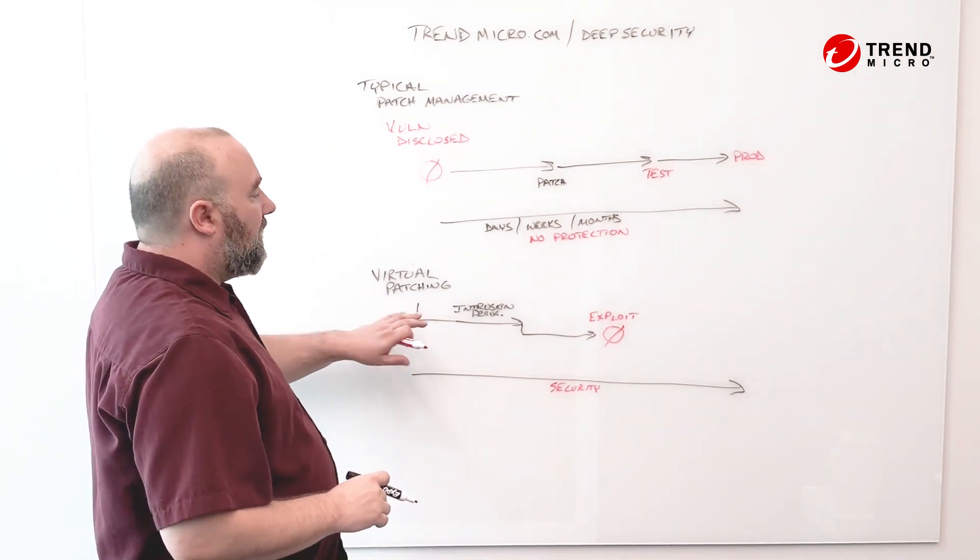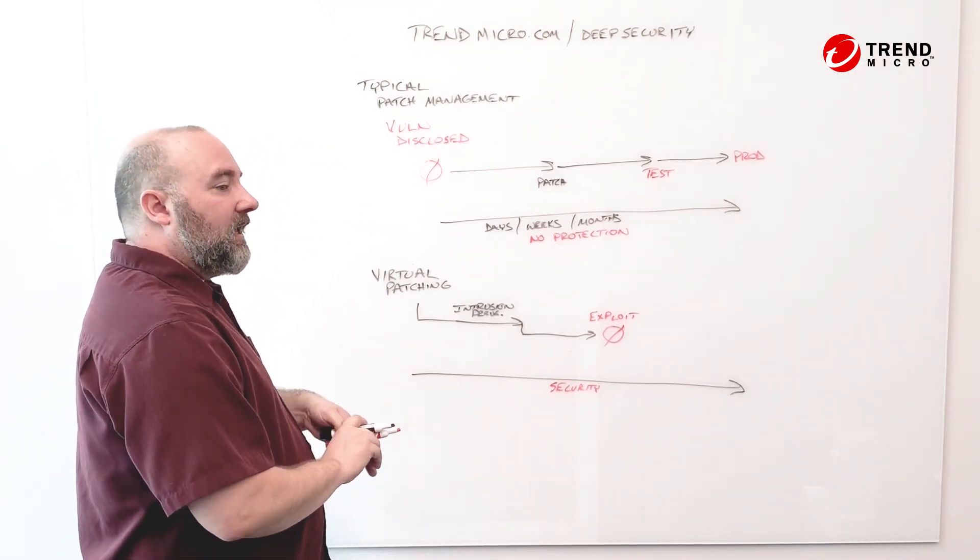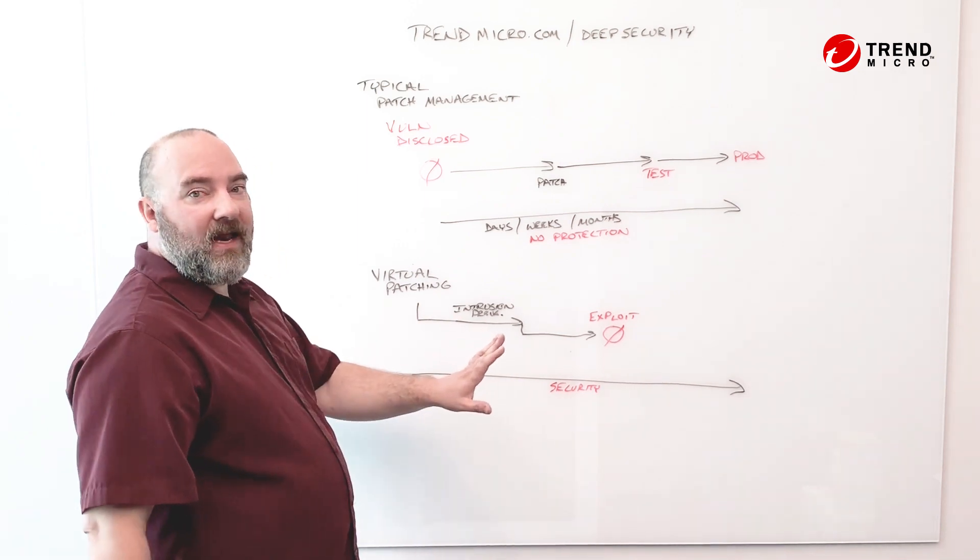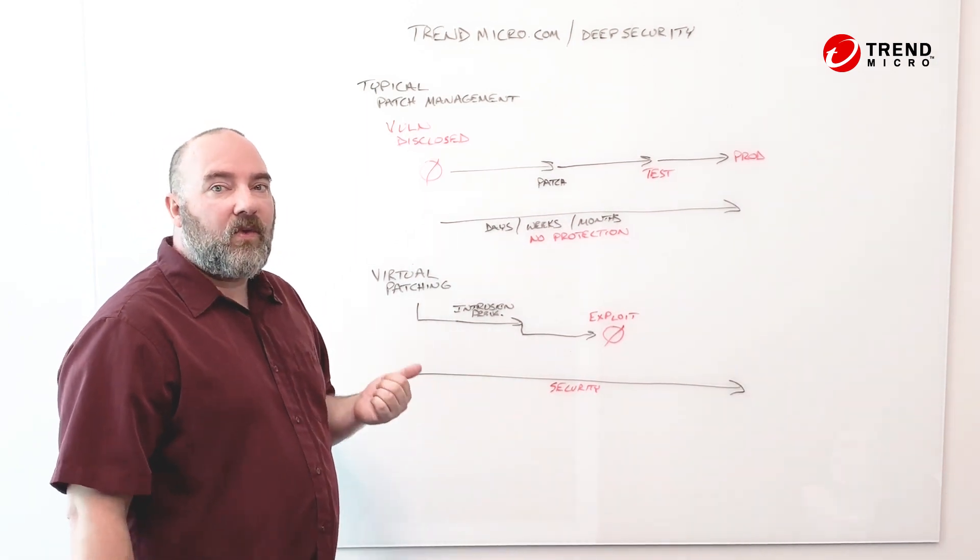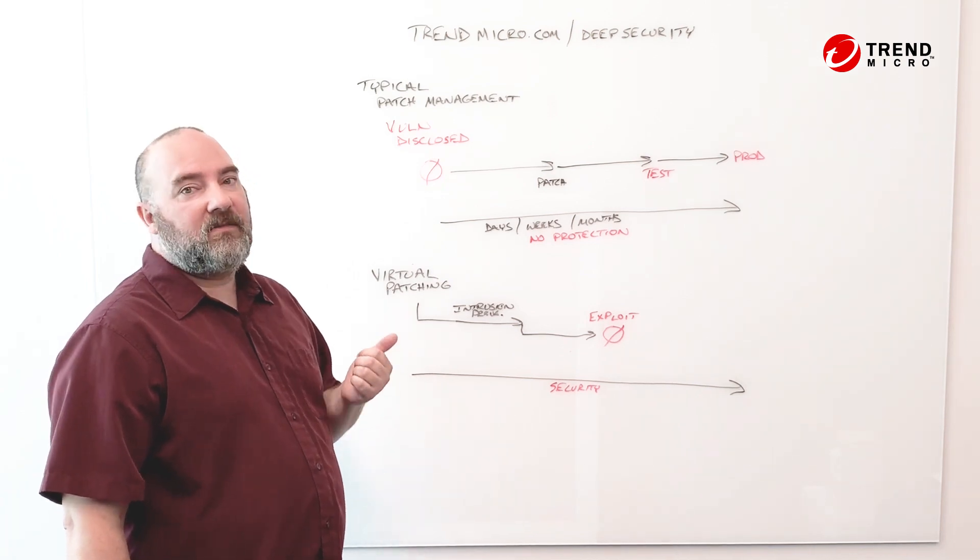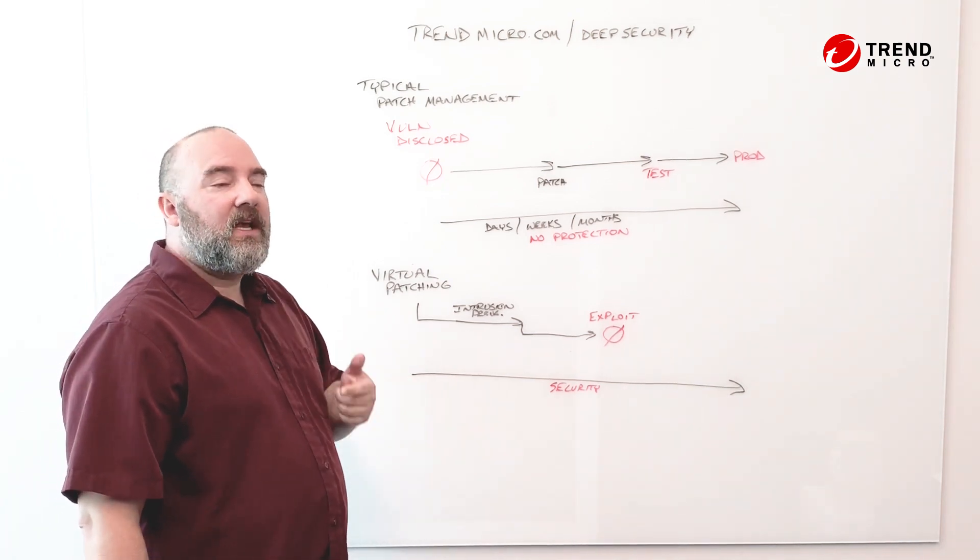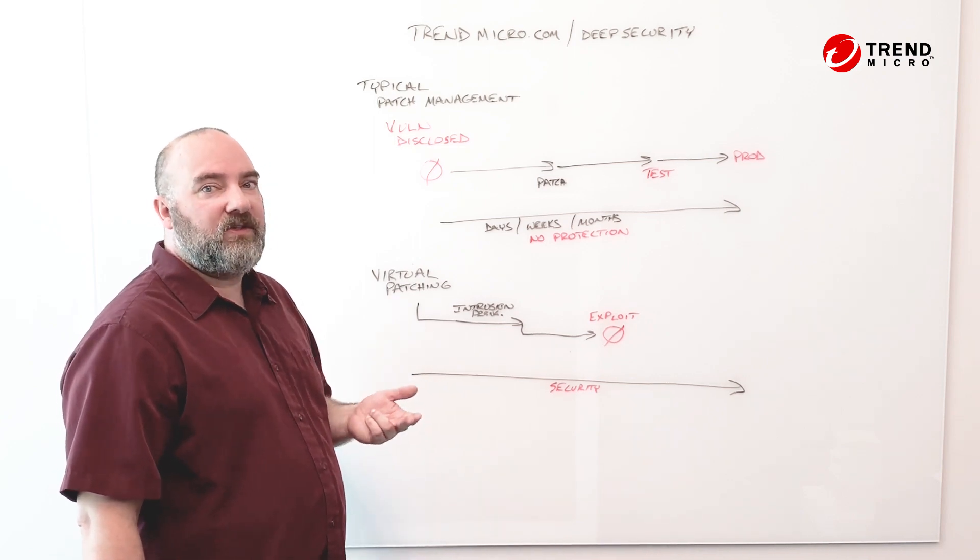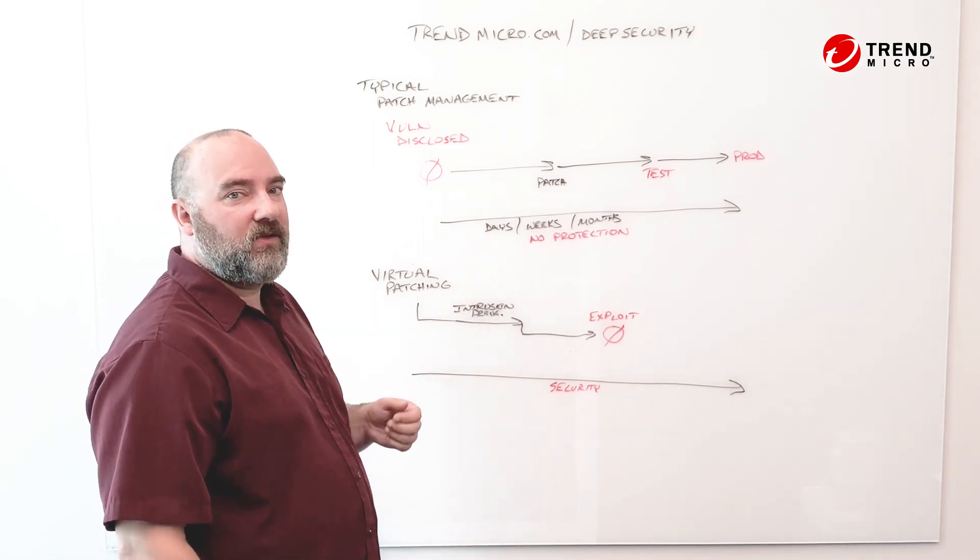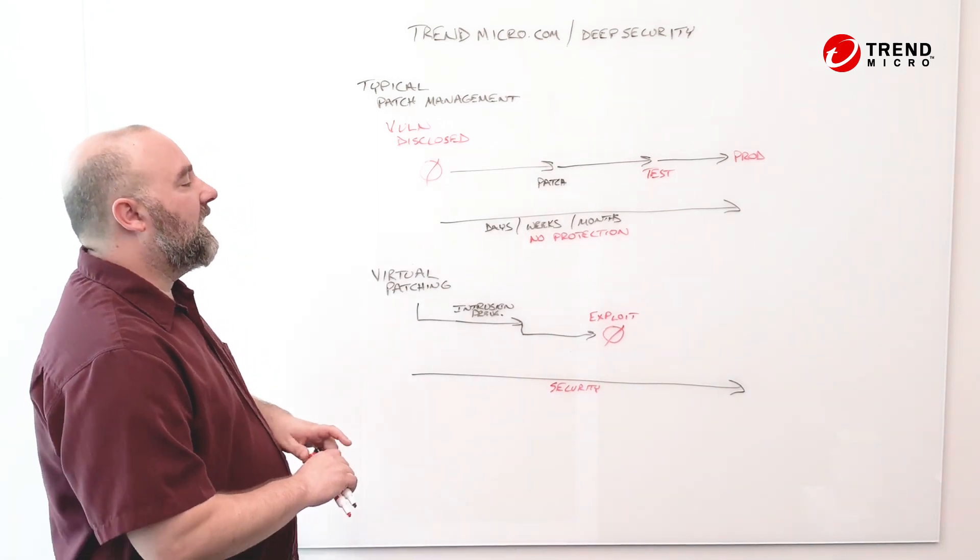Trend Micro's Deep Security offers this feature and actually can do this automatically across your entire environment. So that includes all of your new operating systems, cloud workloads, containers, as well as the legacy workloads which don't have patches such as Windows 2000, 2003, and soon to be Windows 2008.